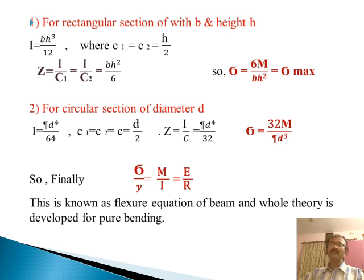For circular section of diameter d, where I is the moment of inertia, that is pi d to the power 4 by 64, c1 equals c2 equals c equals d by 2. z equals I by c, so sigma equals 32M by pi d cubed.